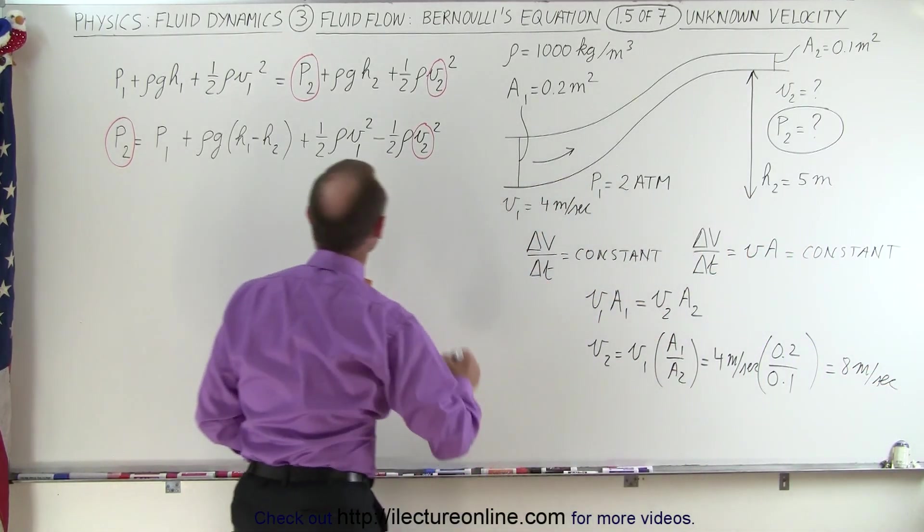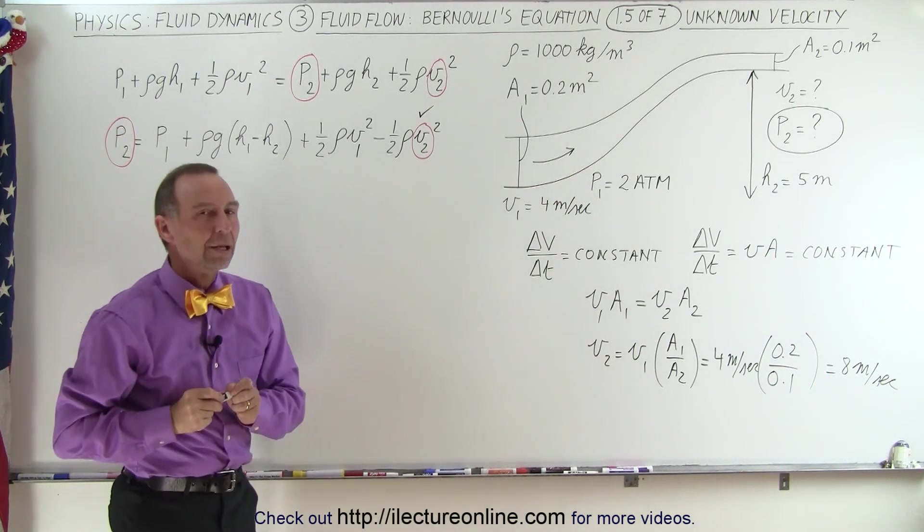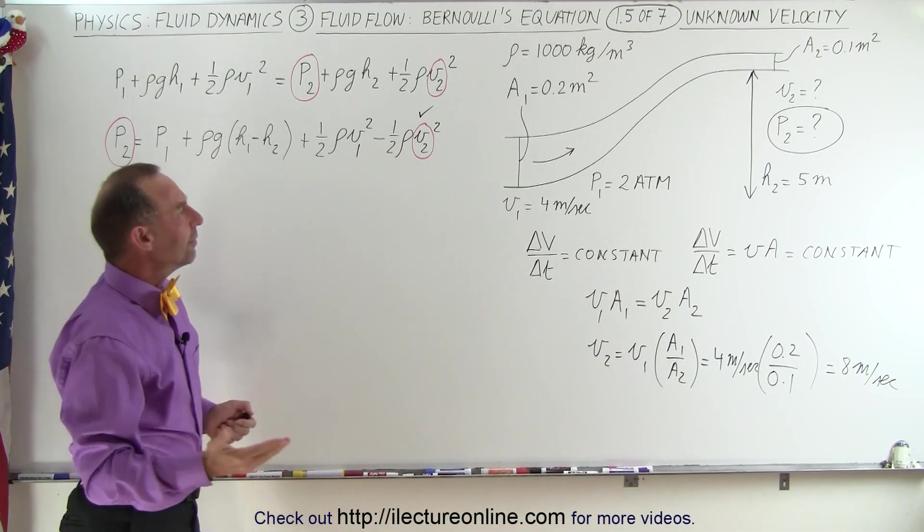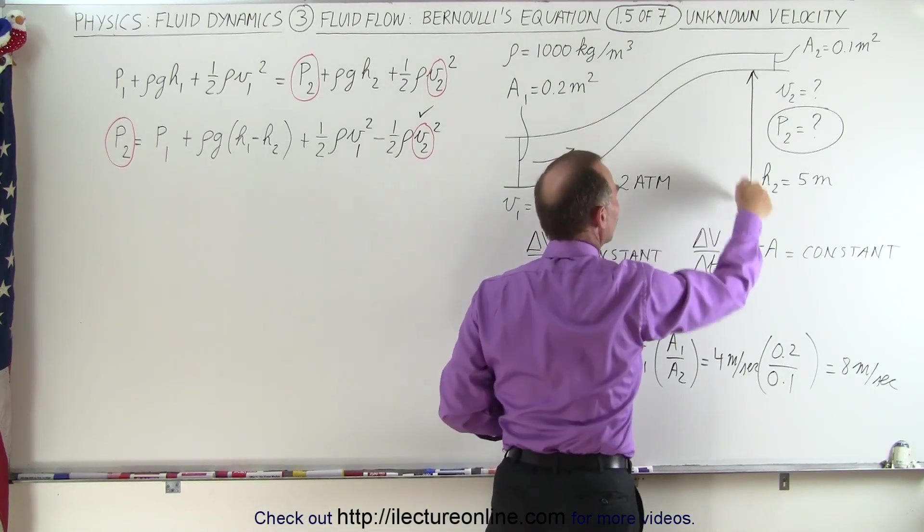So now that we know that, we also know the velocity at point 2. Another item that can be confusing is well they didn't tell us what the height is of point 1. They just gave us the height of point 2.